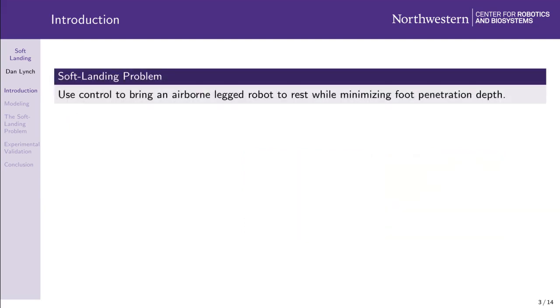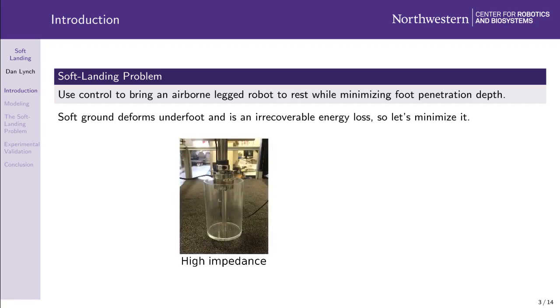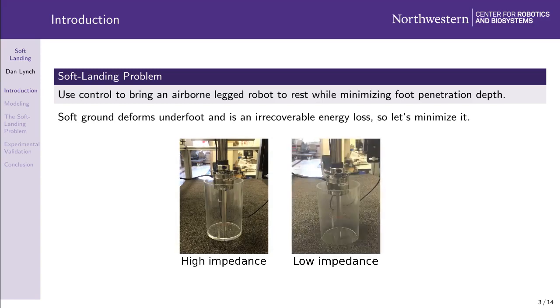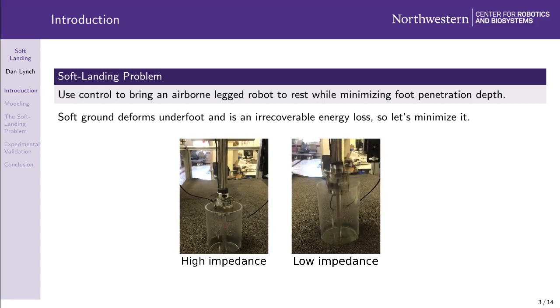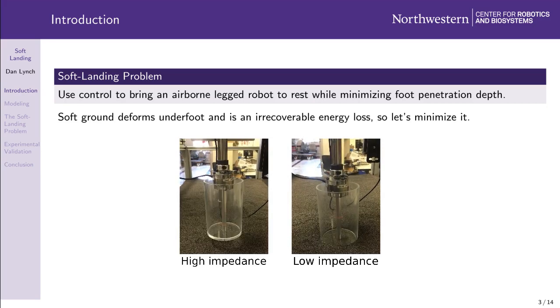In this video, we formulate and solve the soft landing problem, seeking control policies that minimize foot penetration depth for a legged robot coming to rest after impacting yielding terrain. This is motivated by the desire to minimize energy lost to permanent ground deformation underfoot. In the interest of tractability, we restrict our analysis of the soft landing problem to purely vertical motion. These two video clips demonstrate how control can be used to reduce penetration depth for a vertically constrained impactor. A high impedance controller shown on the left results in greater foot penetration depth than a low impedance controller shown on the right.